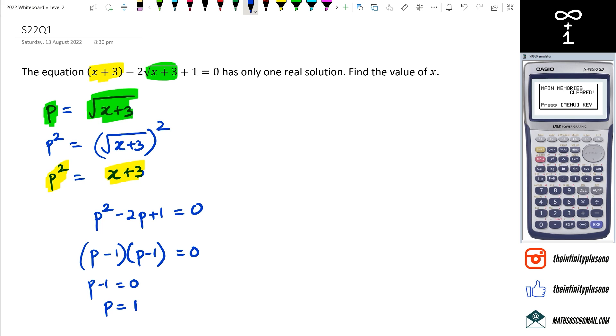So it only has one real solution, but we still haven't found the value of x. So what we're going to need to do is we're going to put down p is equal to square root of x plus 3, and we're going to put down 1 is equal to square root of x plus 3.